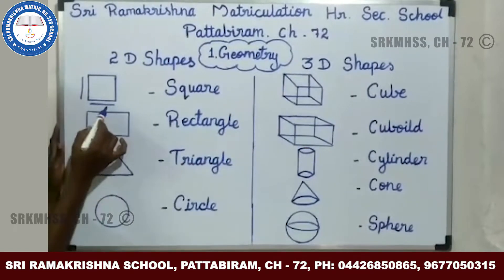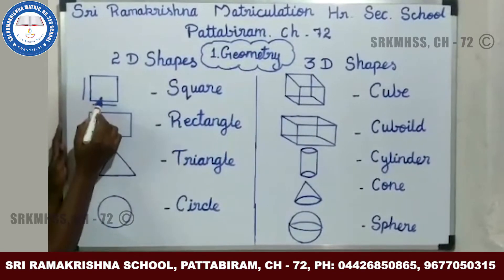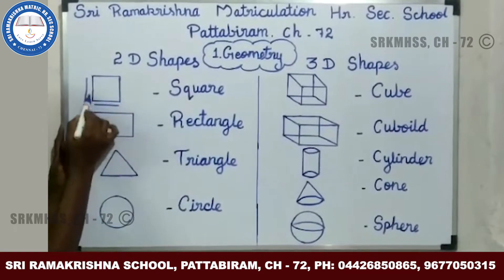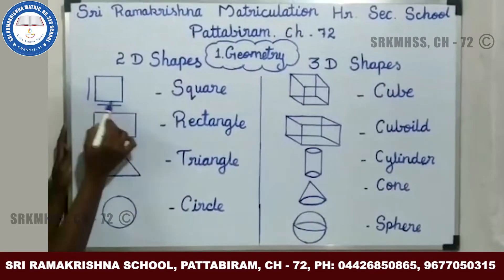Square. A square has 4 equal sides and 4 corners.